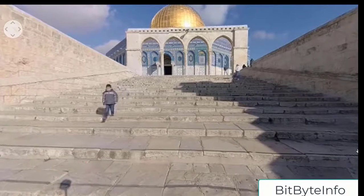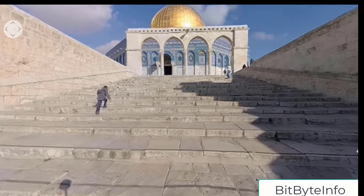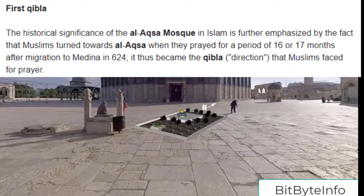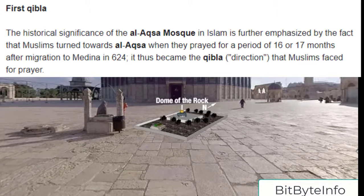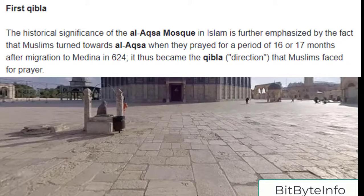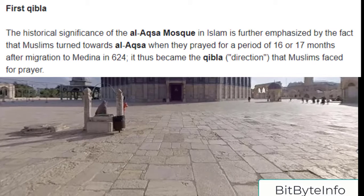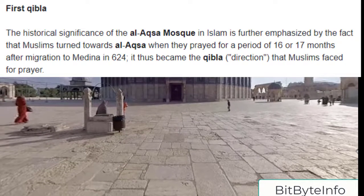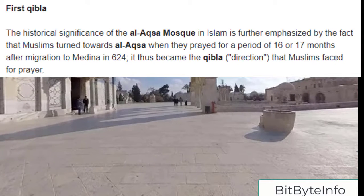Talking about the first Qibla — the Muslims who were taught before were directed to pray towards Masjid Al-Aqsa as their Qibla. Masjid Al-Aqsa was the first Qibla for Muslims. That is why it is so important for Muslims and Islam.